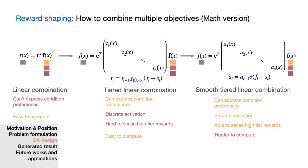And the only difference between the tiered linear combination and the smooth tiered linear combination is the middle function highlighted in blue. In the tiered linear combination, that function is a unit step function, while in the latter, it is a smooth approximation of the unit step function.